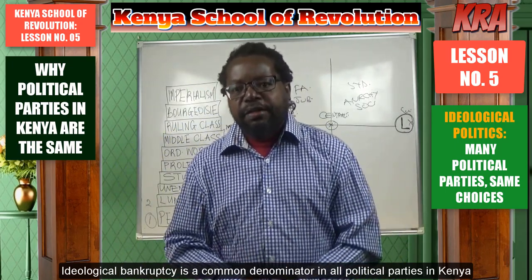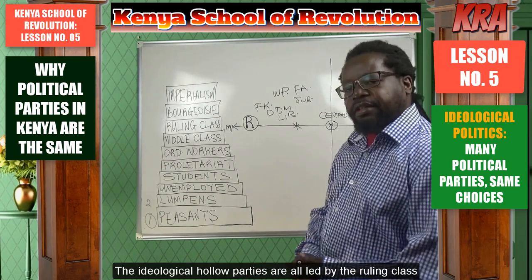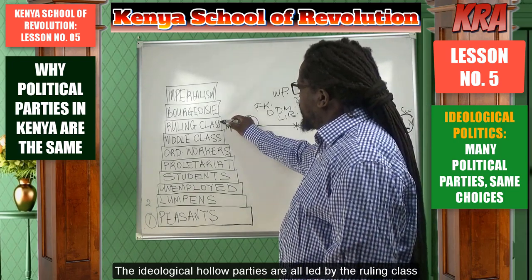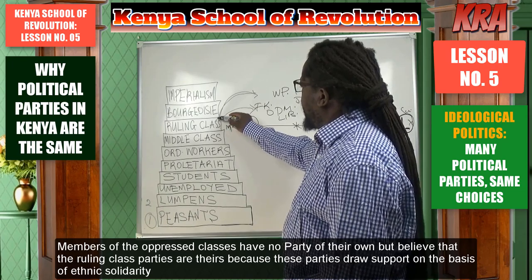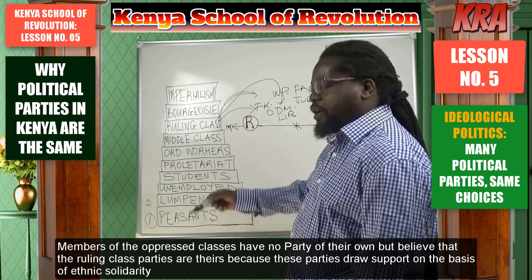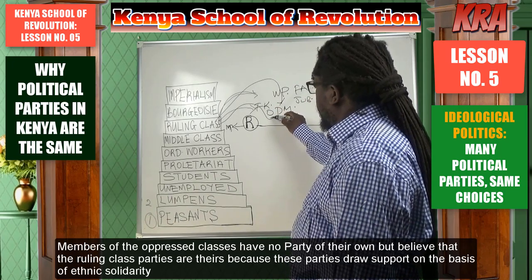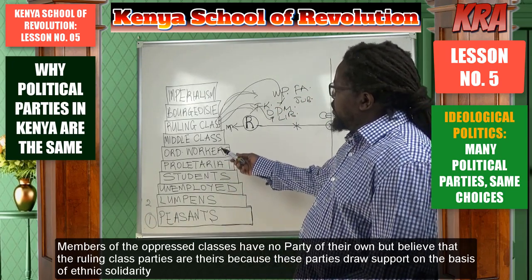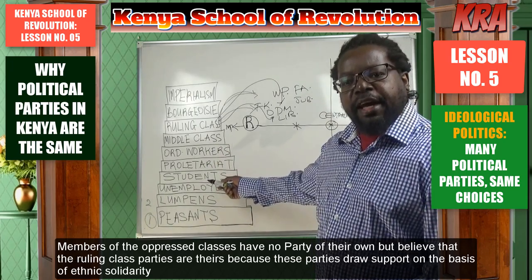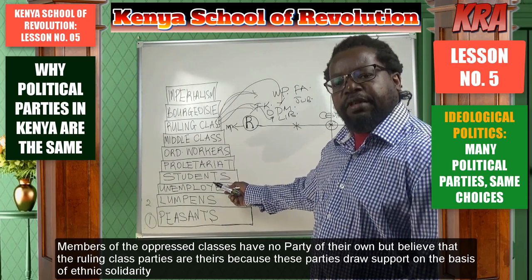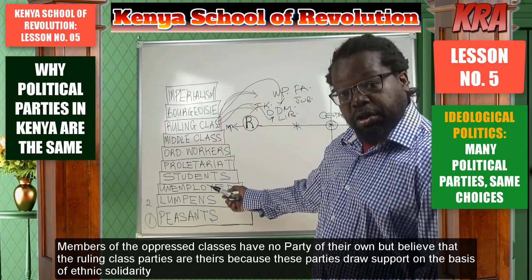If we relate this similarity back to our class system, the majority of these right-wing parties are mainly being led by members of the ruling class — Kalonzo Musyoka, Musalia Mudavadi, Raila Odinga, Moses Wetangula — all from the ruling class leading parties. You don't find members of other classes heading any political parties, because these people don't have a party in Kenya of their own that identifies with themselves, with what they believe in, with their ideals, and with their conditions.